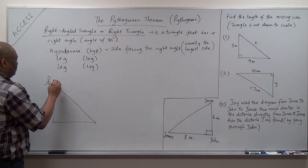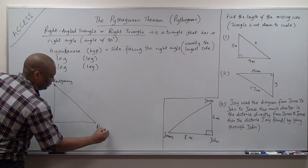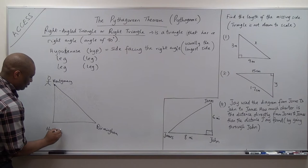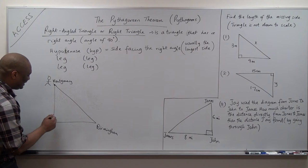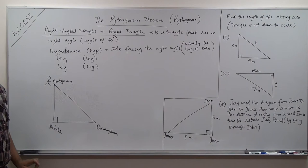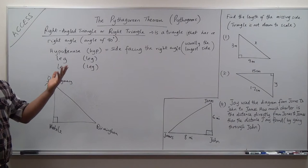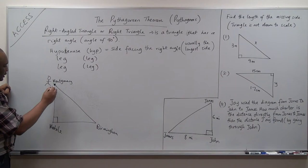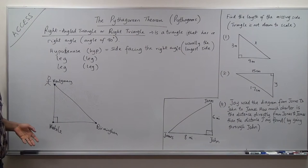Let's say this is Montgomery, this is Birmingham, and this is Mobile — the three main cities in Alabama. Let's say this is a right triangle. This guy wants to go from Montgomery to Birmingham. He can choose to go from Montgomery to Mobile and then from Mobile to Birmingham, or he can just drive straight from Montgomery to Birmingham.